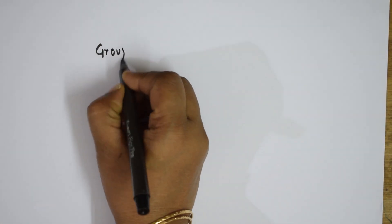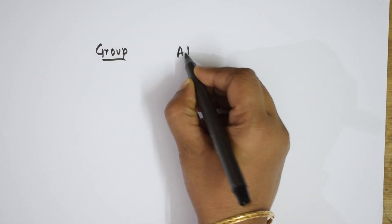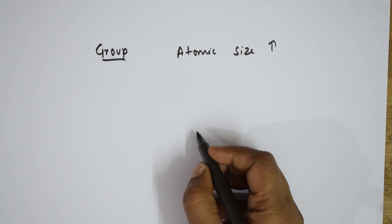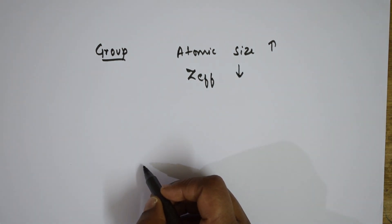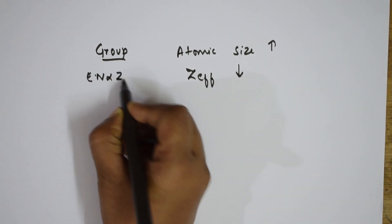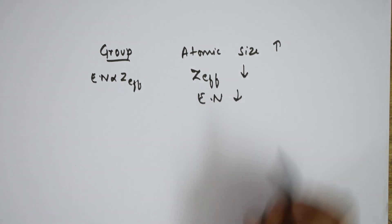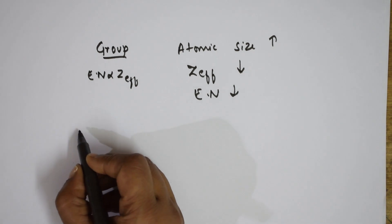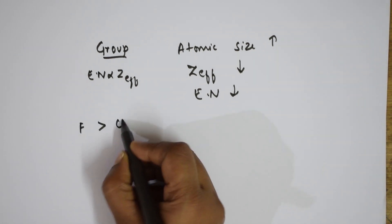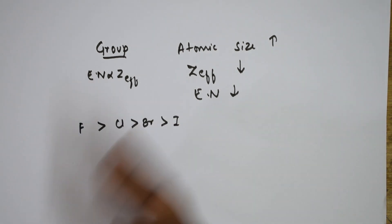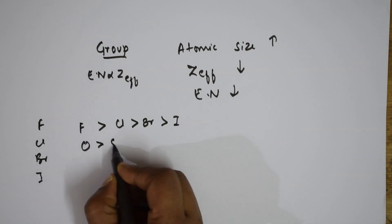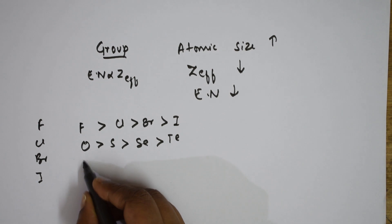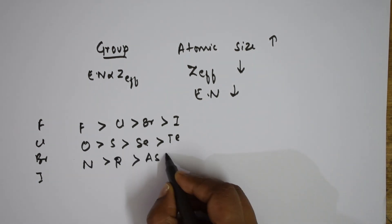In a group, from top to bottom, atomic size increases, so Z-effective decreases, and since electronegativity is directly related to Z-effective, electronegativity also decreases down the group. For example: F > Cl > Br > I; O > S > Se > Te; N > P > As > Sb.